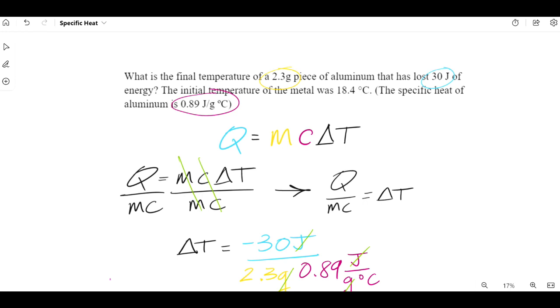In this one, it asks, what is the final temperature of a piece of aluminum? And you'll notice I've circled 2.3 grams in yellow, and I've also written in our equation the M in yellow as well, and that's because that's where we're going to be putting that 2.3 grams. And this piece of aluminum has lost 30 joules of energy. So, as we stated, energy lost or gained, thermal energy specifically, is Q. So, that 30 is going to be connected to the Q variable in our equation, which is why it's circled in blue and it's written in blue in the equation. The initial temperature of the metal was 18.4 degrees Celsius, and then we're told that the specific heat of aluminum is 0.89 joules divided by grams degrees Celsius.